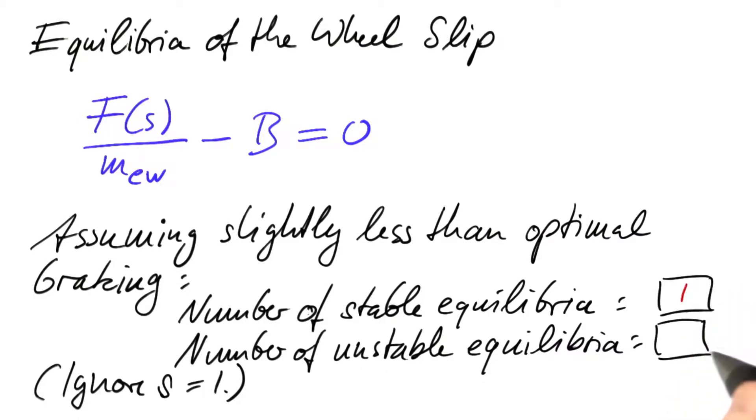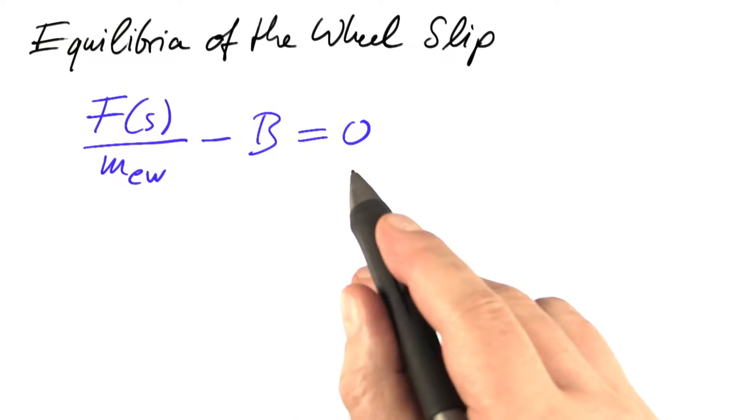It turns out that there is one stable equilibrium and one unstable equilibrium. And now we'll discuss the details.